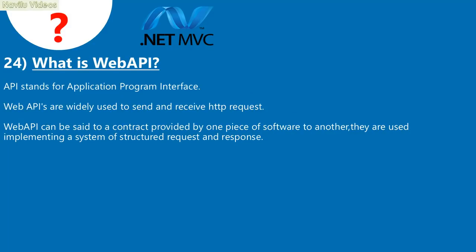Question 24: What is Web API? API stands for Application Program Interface. Web APIs are widely used to send and receive HTTP requests. A Web API can be set as a contract provided by one piece of software to another, implementing a system of structured request and response.